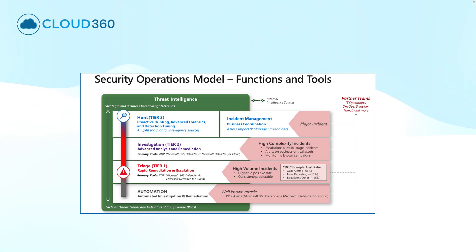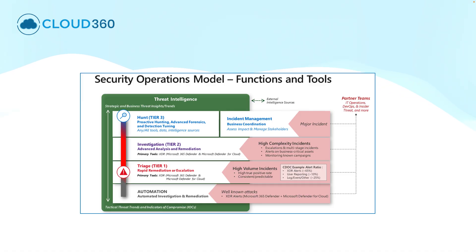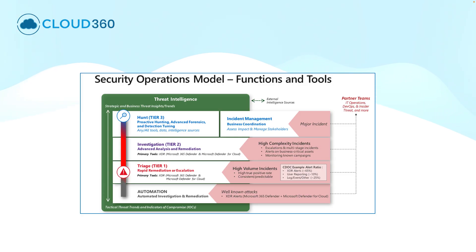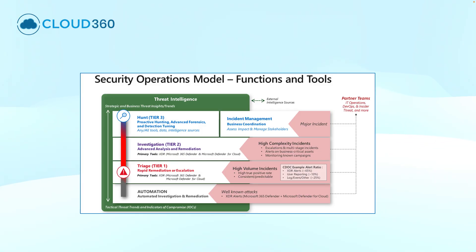If we look at the security operations model, at the bottom layer, that is the automation layer where we automate the investigation and remediation for well-known attacks. After that, we do triages to reduce false positives and increase the number of true positives. Then there is the investigation at tier two, and hunting is done by tier three. Most repeated or well-known attacks can be remediated automatically with automation, which can reduce fatigue for security teams.